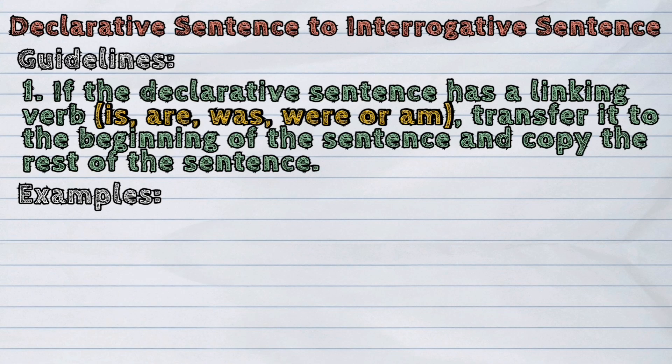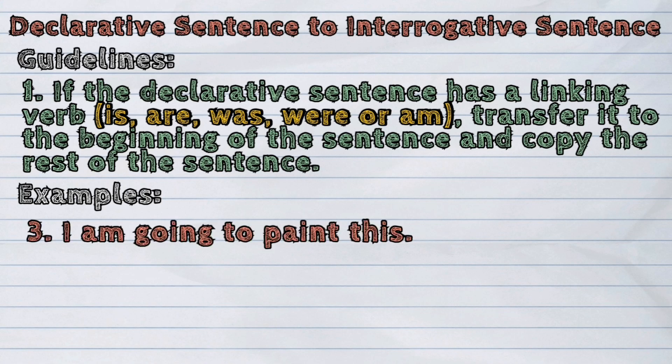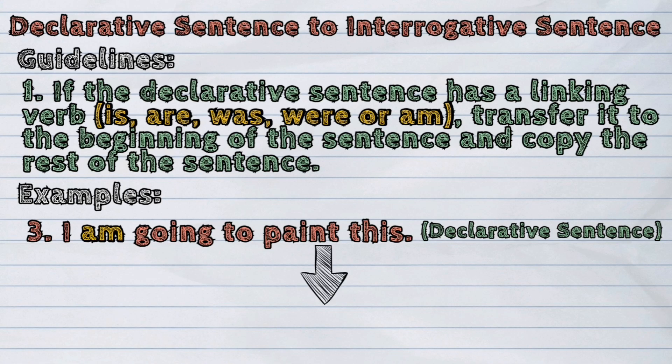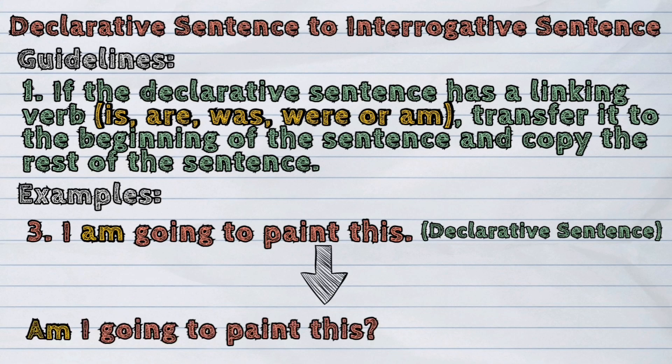Last example for the first guideline: I am going to paint this. The linking verb in the sentence is 'am.' We will put it to the beginning, and the sentence will now become: Am I going to paint this?